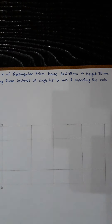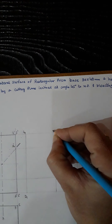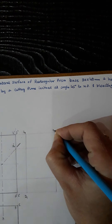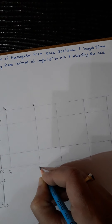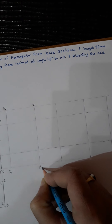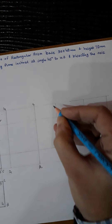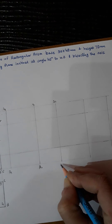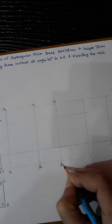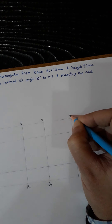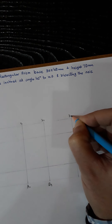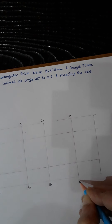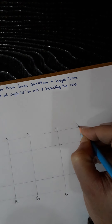Now name the development vertices: this is 1₁, a₁; then 2₁, b₁; then 3₁, c₁; and again 4₁, d₁.